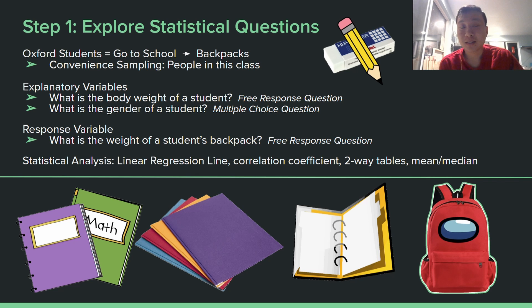Step one: statistical questions. My statistical questions were weight of backpack, body weight, and gender. The explanatory variables were body weight and gender. The response variable was weight of backpack.